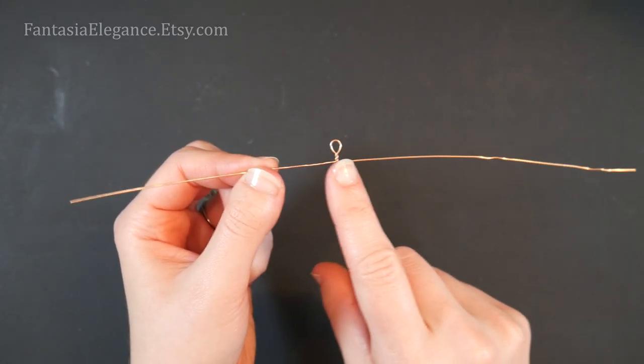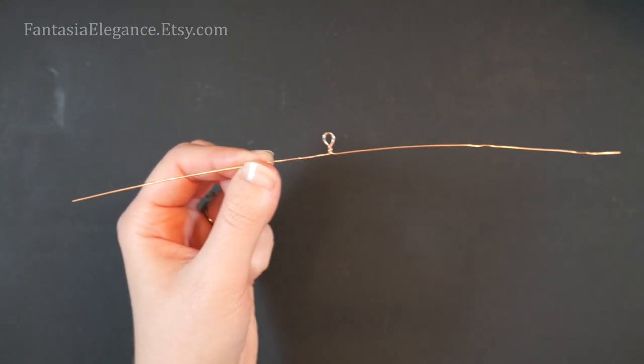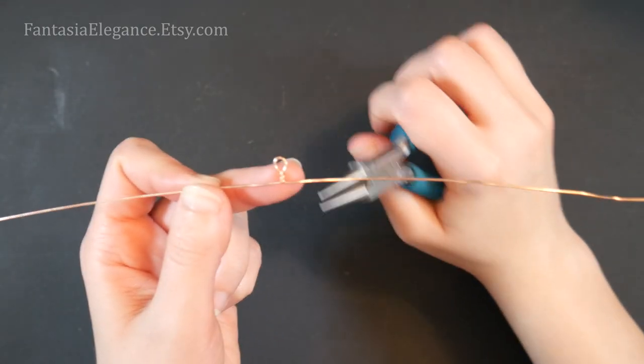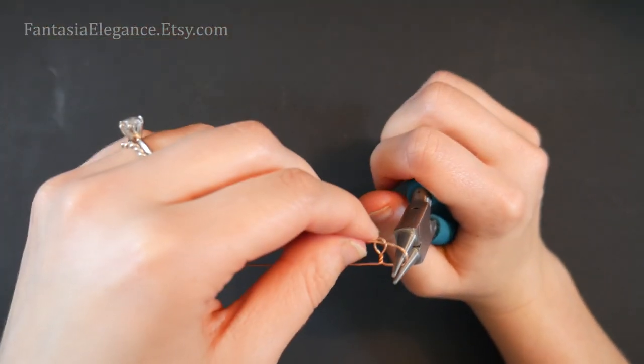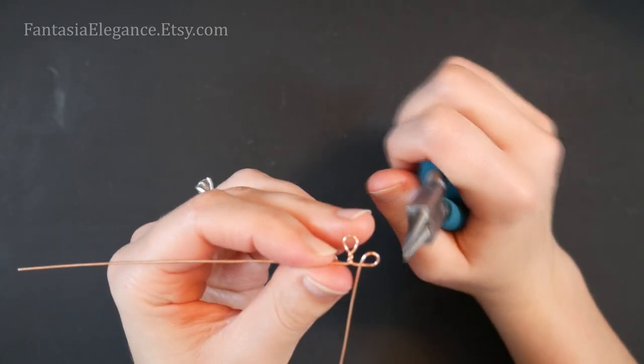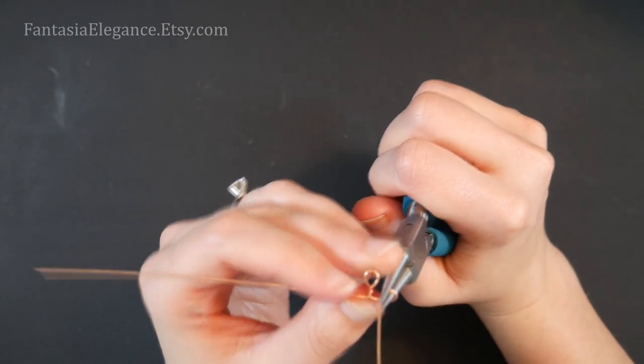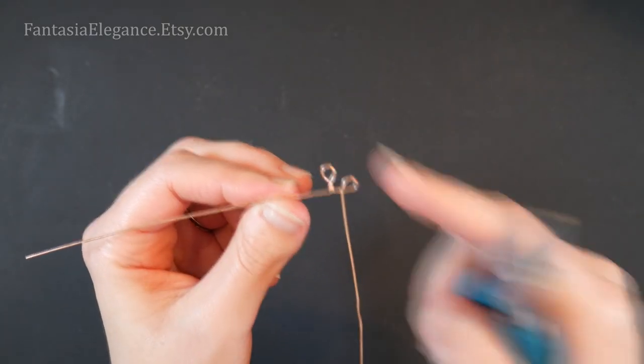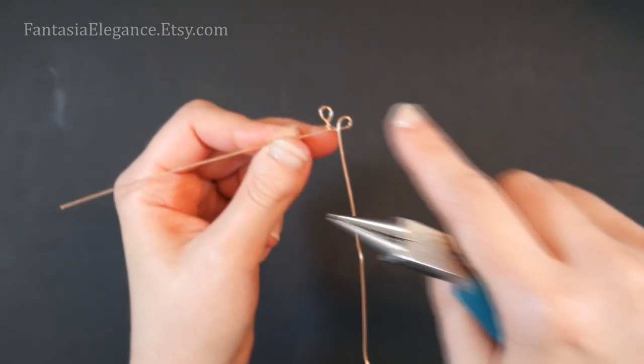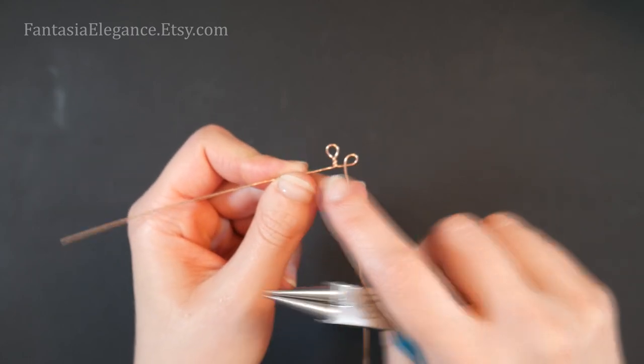And then what we want to do is create two more little teardrops pointing off to either side. To do that, let's go ahead and pull out our round nose pliers once again. I'm just going to wrap it around. You want these to be a little bit smaller than that one on top, and additionally you want to have the tails coming from opposite directions.